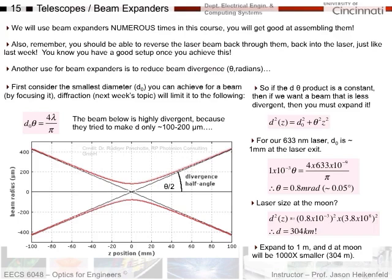Let me explain this a little bit further. What I want you first to consider is the smallest diameter d₀ that you could focus a beam down to. Here's the smallest diameter that you could focus a laser beam down to for a given wavelength and a half angle size.